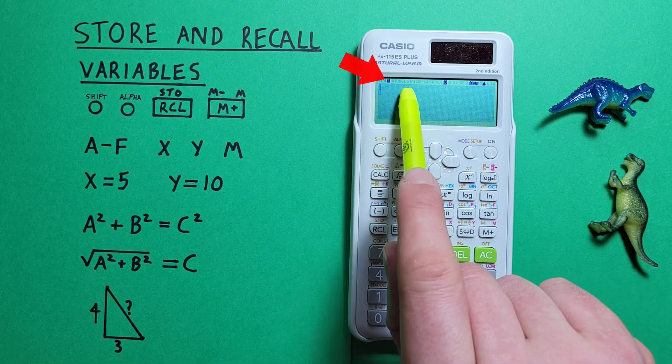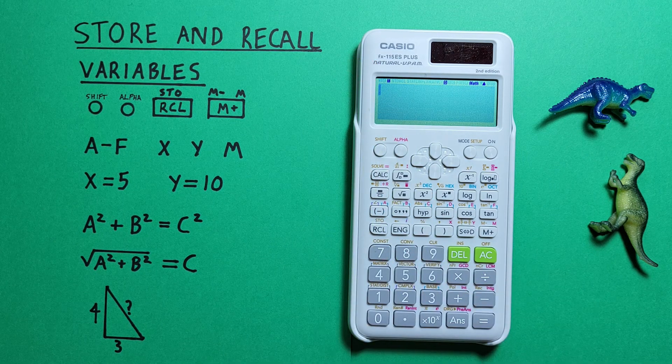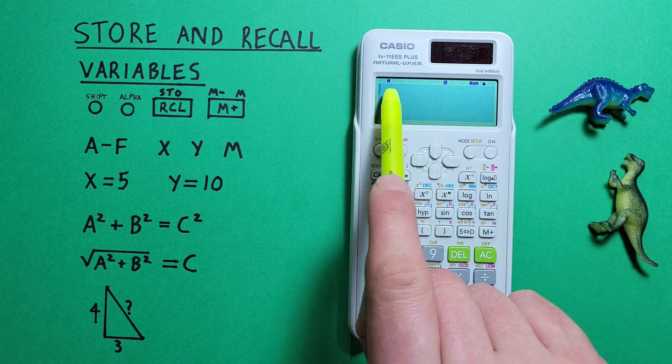You'll notice an m that appears on the top of our screen when we have a value stored in our m or independent variable slot. This is just reminding us that there's something stored there.